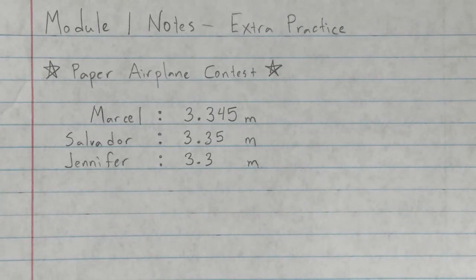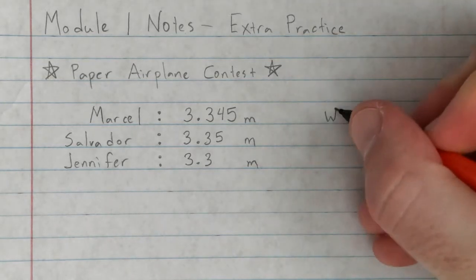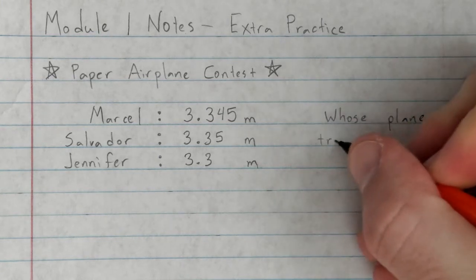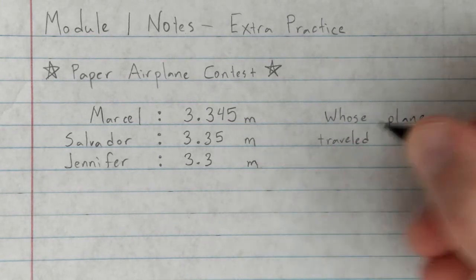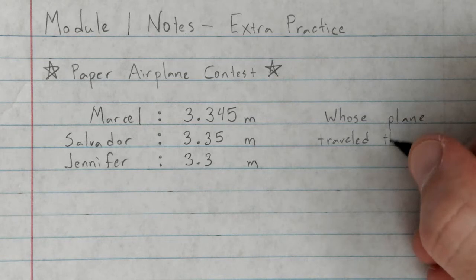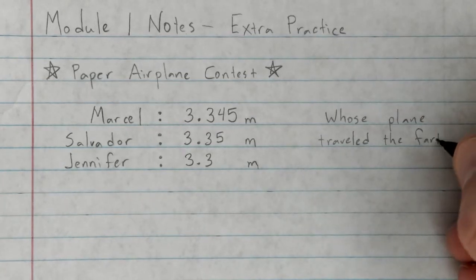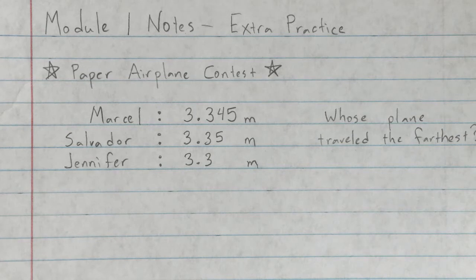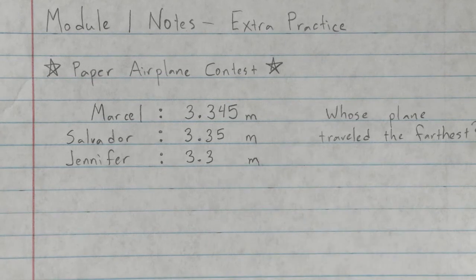Now based on these measurements, whose plane traveled the farthest? You're going to use these measurements. I would also suggest you use a place value chart. Now we don't have to draw the entire thing out.